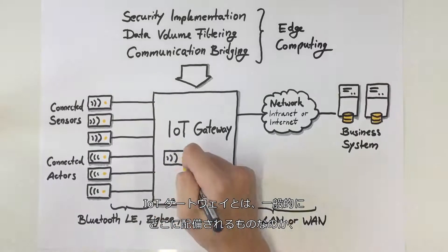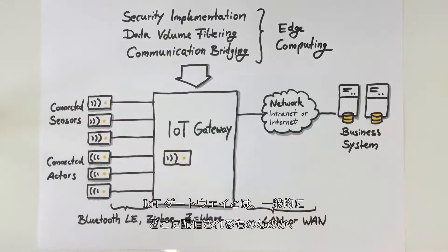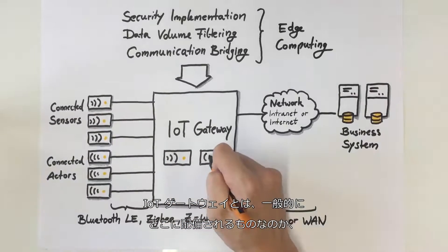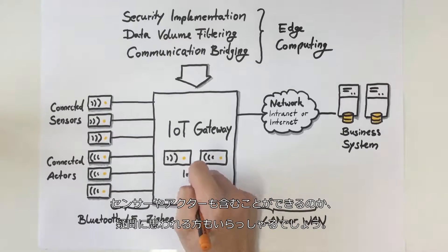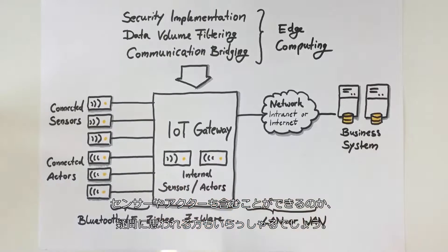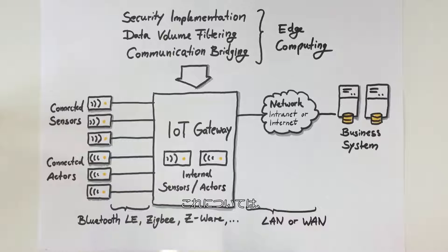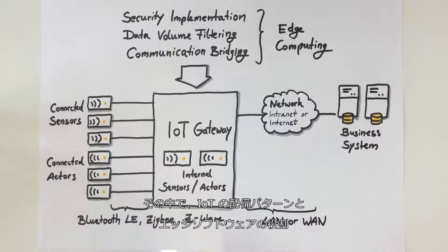You might now be wondering where an IoT gateway is typically deployed or whether it can also include sensors and actors. This leads us to the next topic, which will be covered in one of our upcoming videos, where we plan to talk about IoT deployment patterns and the role of edge software.